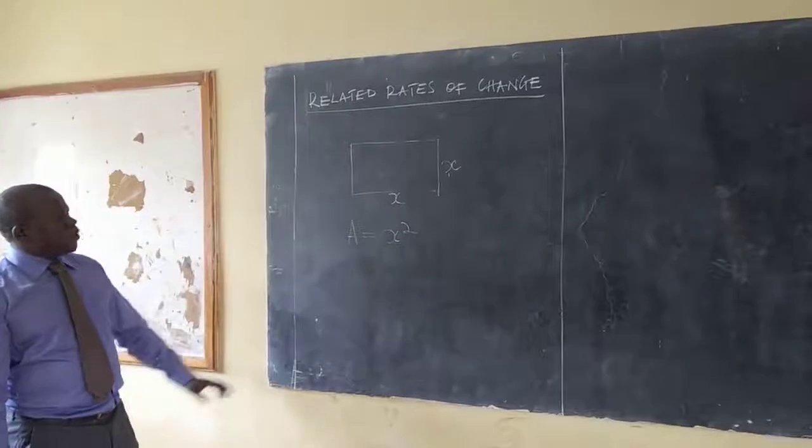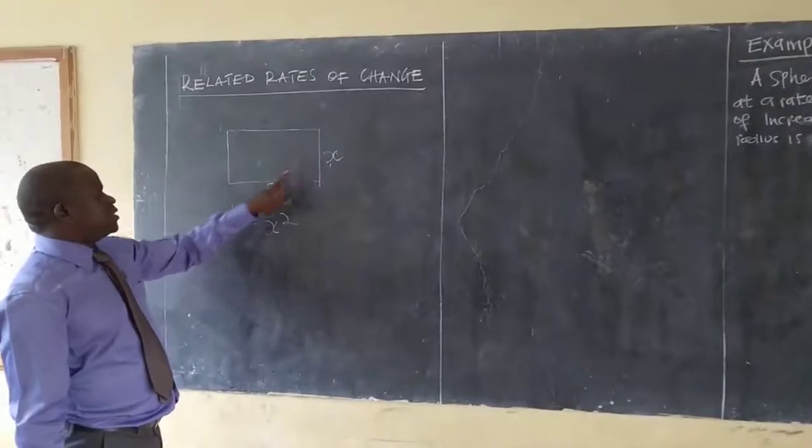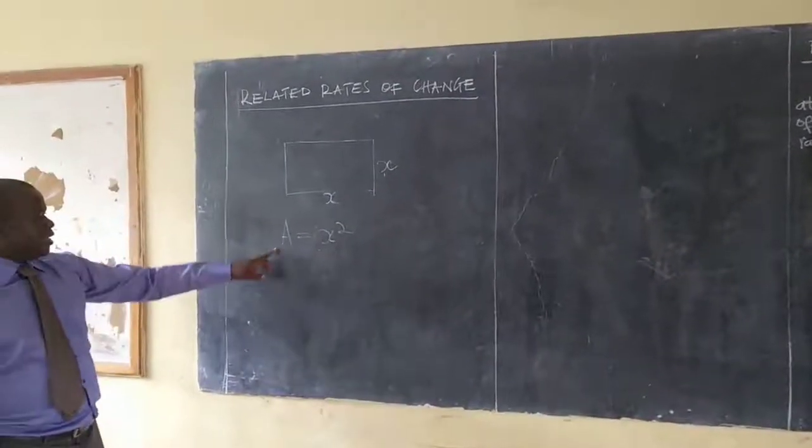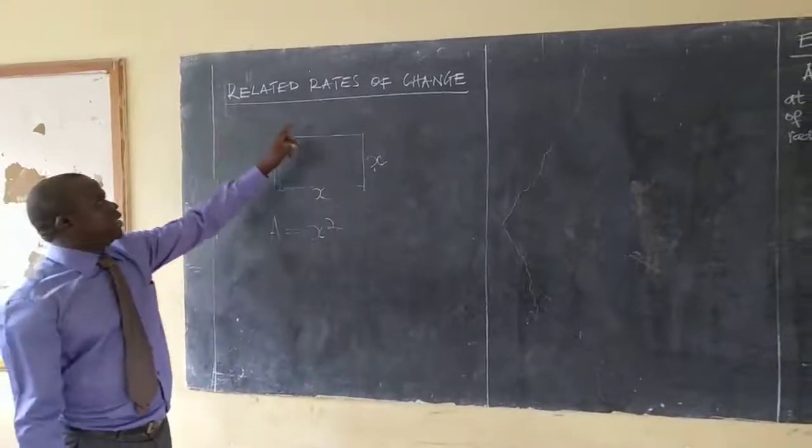Now, when this size changes, the change in the size of this square as well affects the change in area. That's what we call related rates of change.